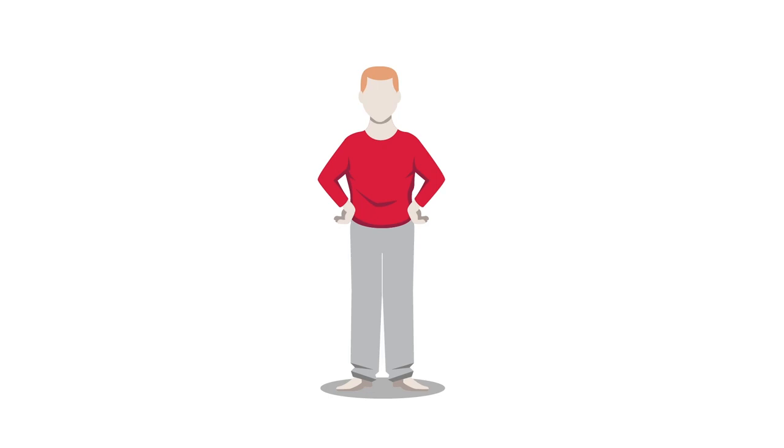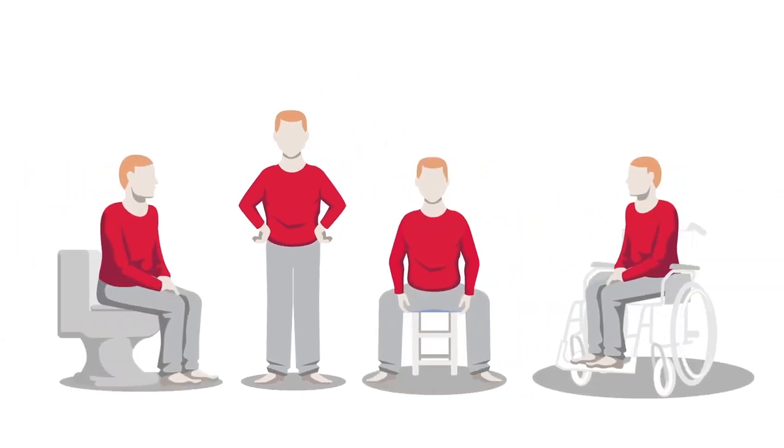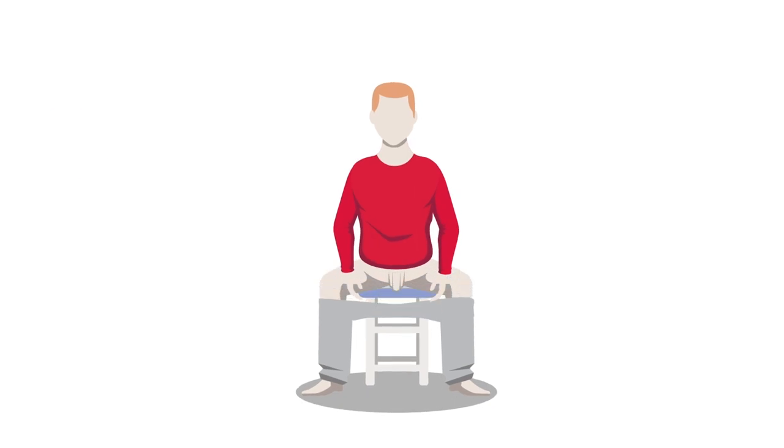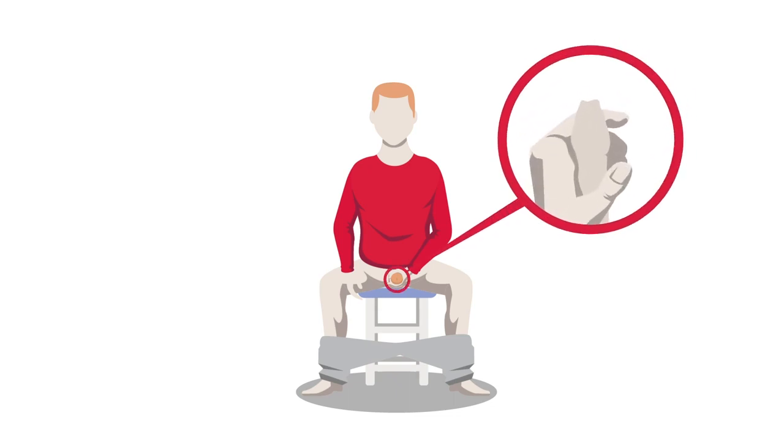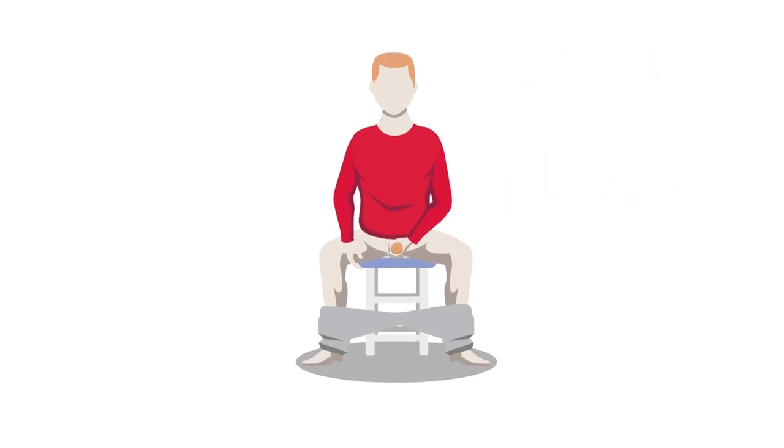Some men prefer to stand for the procedure, but it can be done just as easily in the sitting position. Manipulate your clothing to access your genitalia. Lift your penis using your non-dominant hand and retract your foreskin unless circumcised. Cleanse your glans penis and around your urethral opening as instructed by your healthcare professional. Now you are ready to use the Vapro Pocket Cudé catheter.